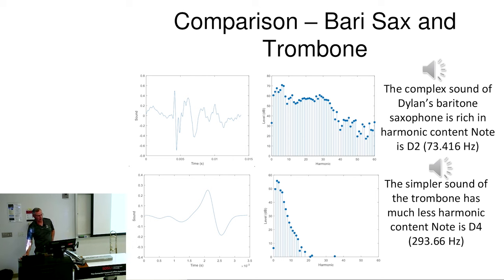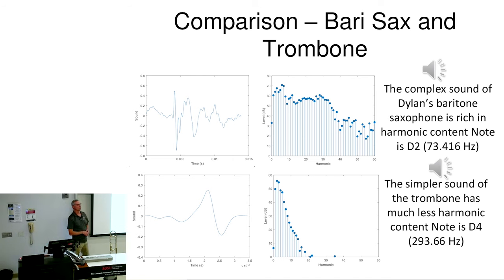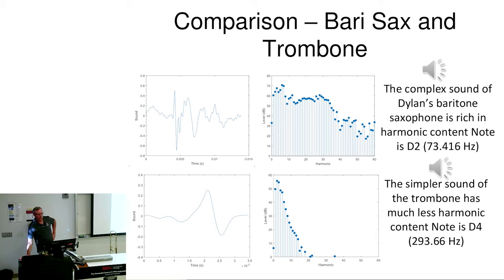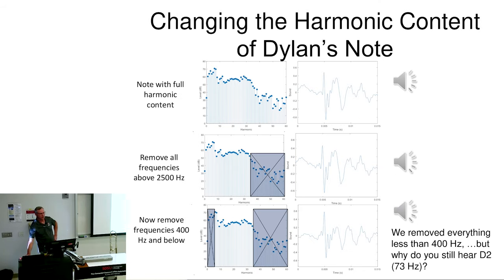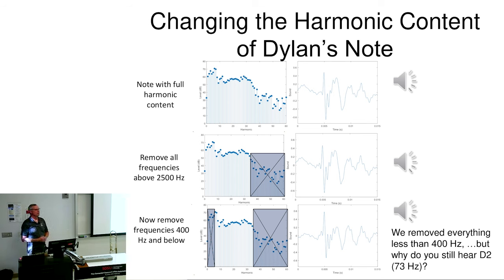Here's Dylan's sound, here's one period of his sound, and we just looked at it in the frequency domain. Let's compare it to the note of a trombone. Here is one period of a trombone signal, and it doesn't have all those wiggles — all those high-frequency wiggles that the baritone sax has — so it doesn't have nearly as much harmonic content. Now what we're going to do is change the harmonic content of Dylan's notes: take that note, put things in, take things out, and show you a really fascinating result.